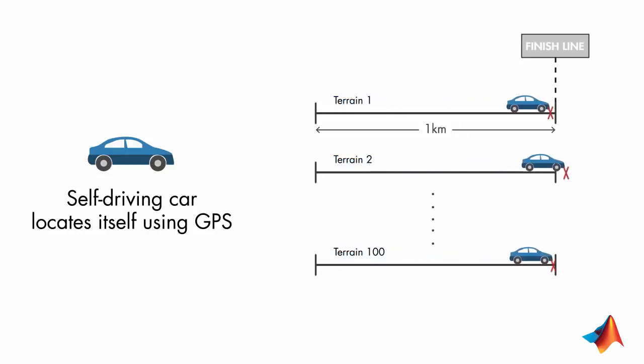At the end of the competition, the average final position is computed for each team and the owner of the car with the smallest error variance and an average final position closest to 1 km gets the big prize.